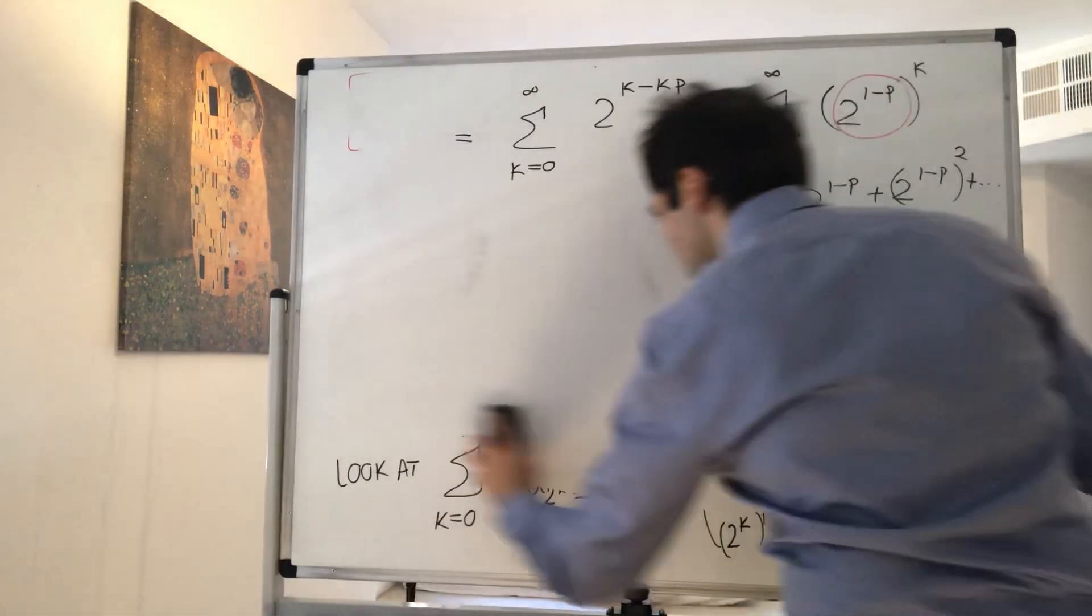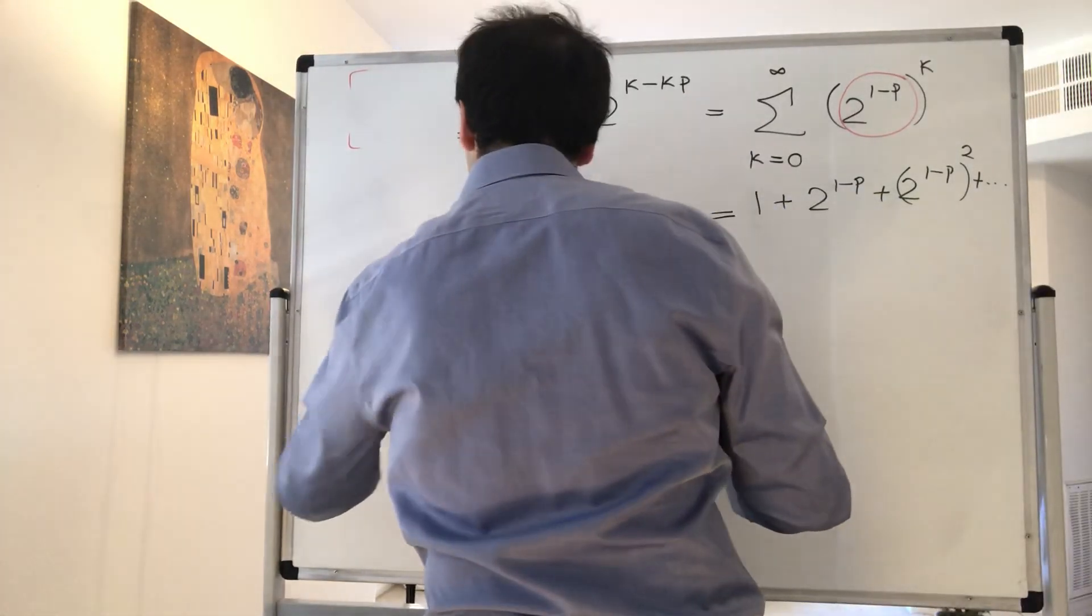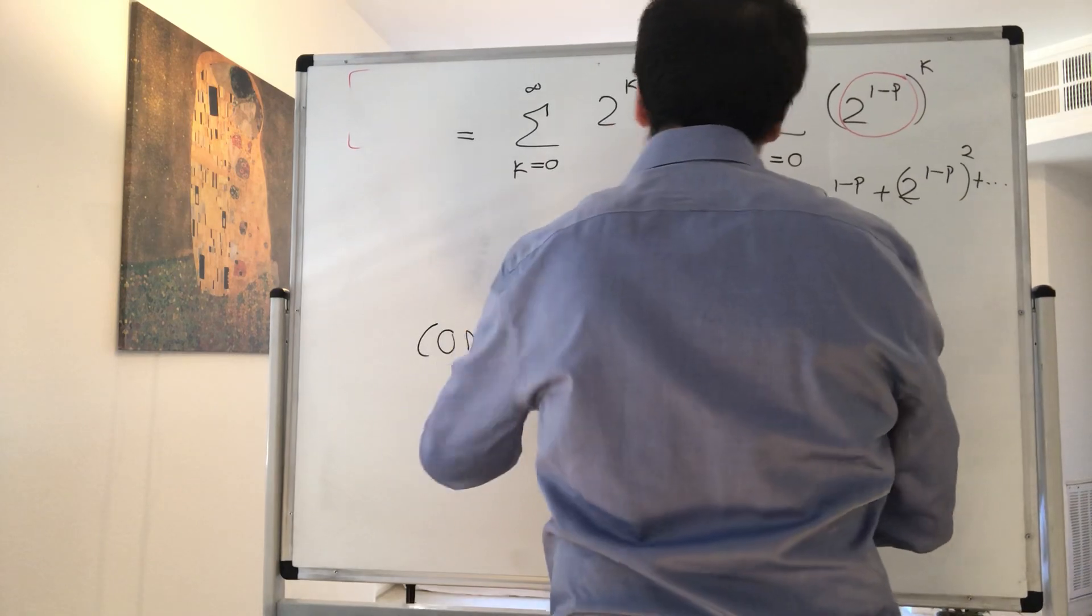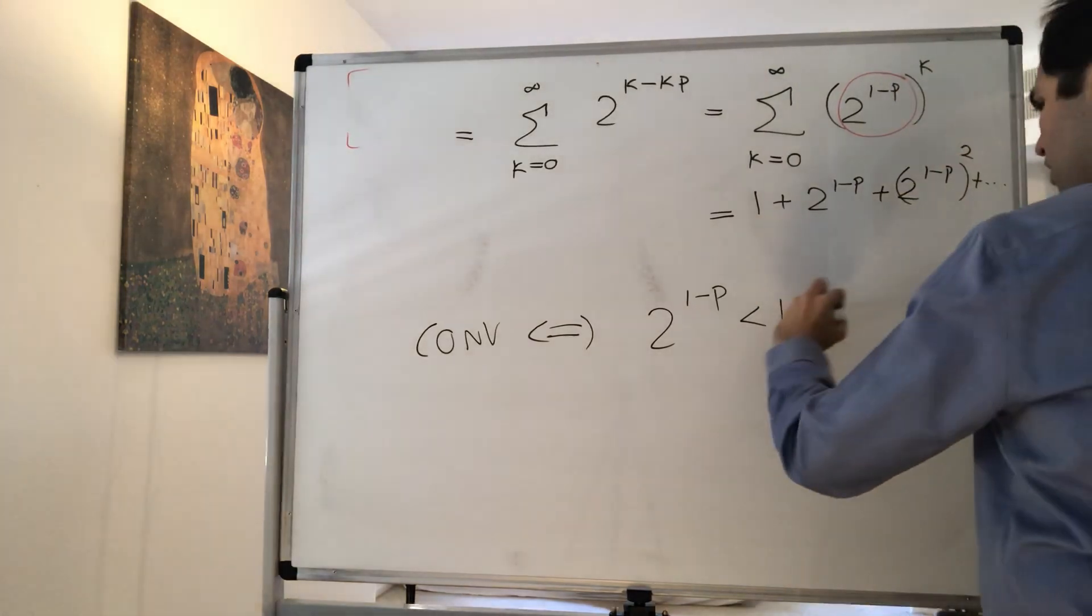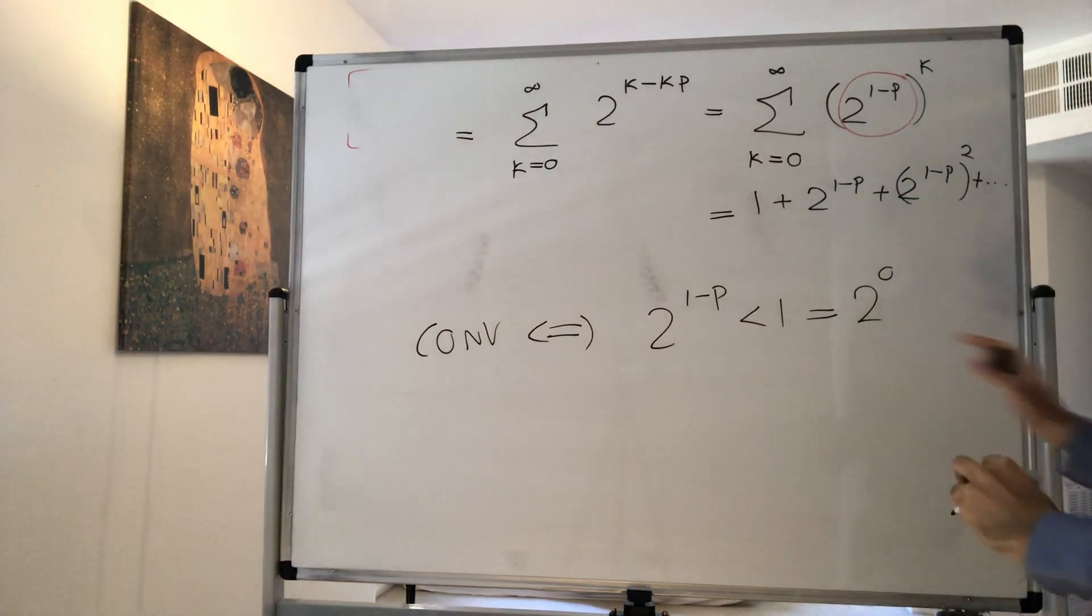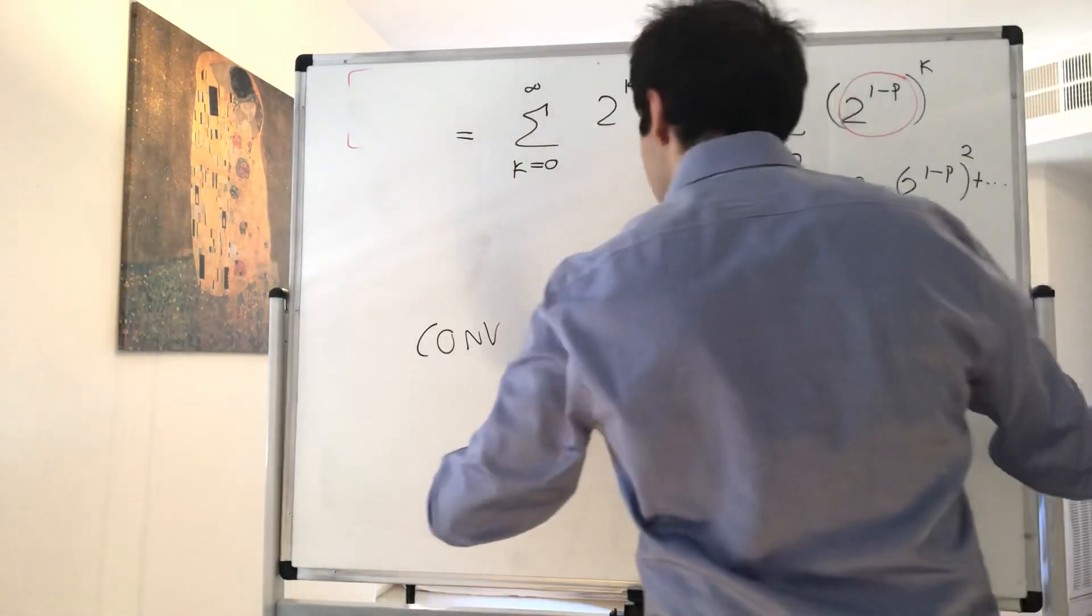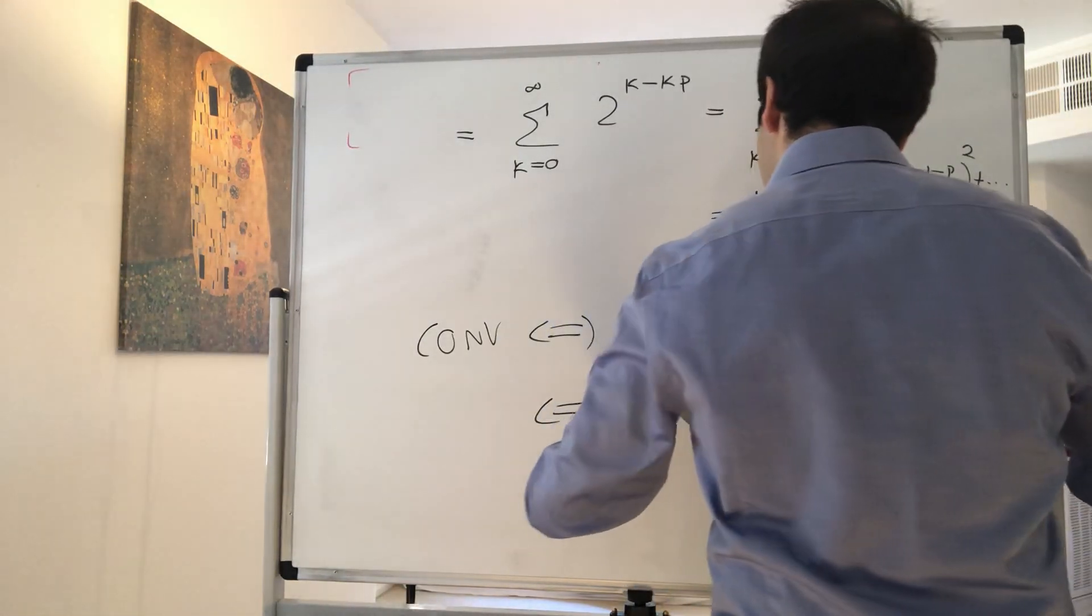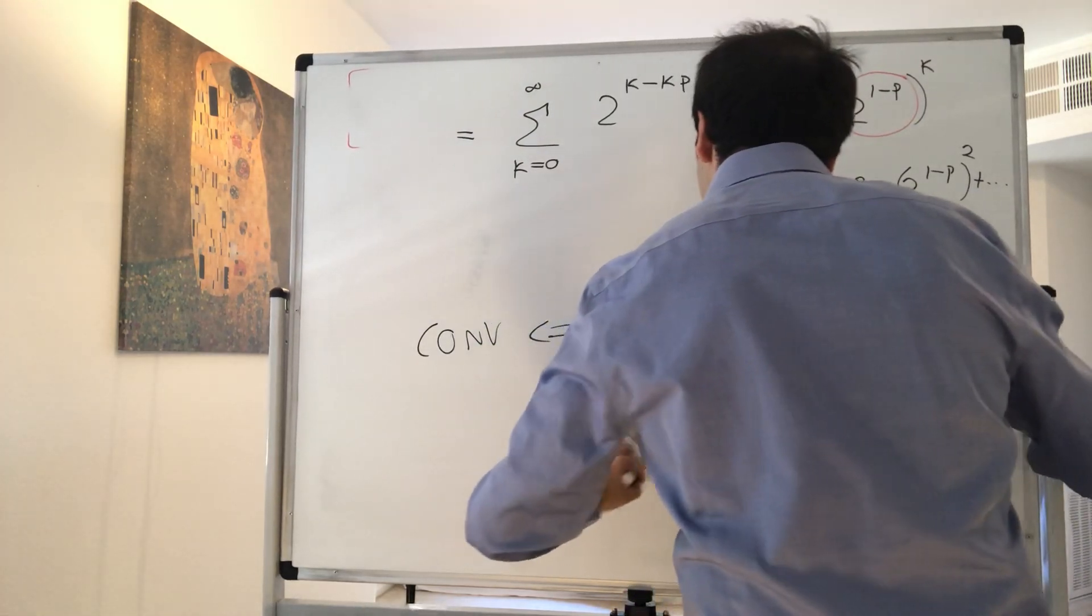So we know from the geometric series that this converges if and only if 2^(1-p) is less than 1. And remember, 1 is 2^0. So we just need to figure out when 1 minus p is less than 0. But this just implies p is greater than 1.